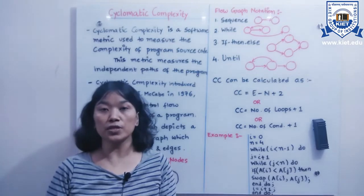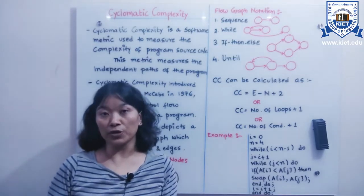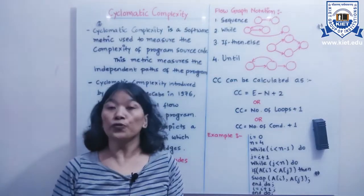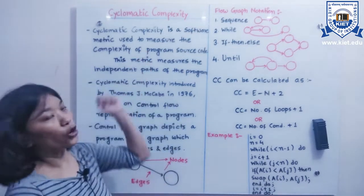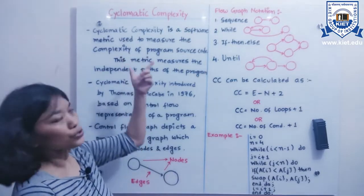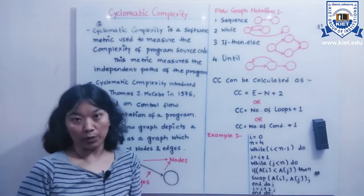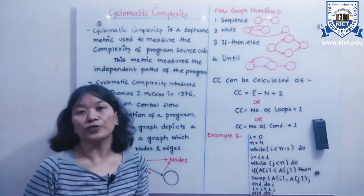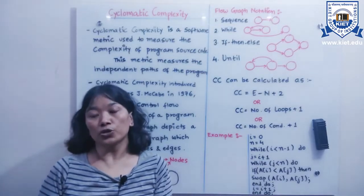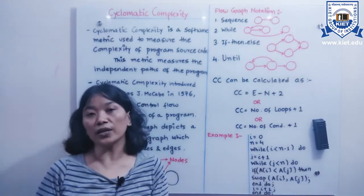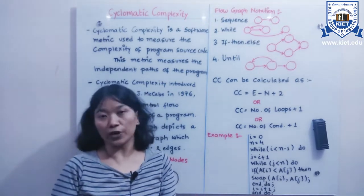Hello students, welcome back to the lecture series of the software engineering course. Today I will cover software metrics — specifically cyclomatic complexity. Cyclomatic complexity is one of the software metrics used to measure the complexity of a software program. If I know the complexity during the early stages of the life cycle, it will be easier to prepare for risk and understand how the software development process proceeds.